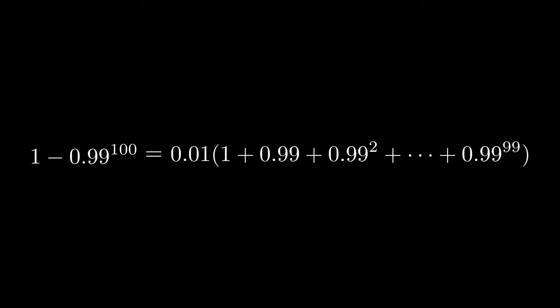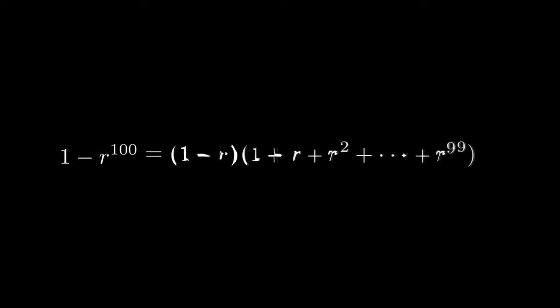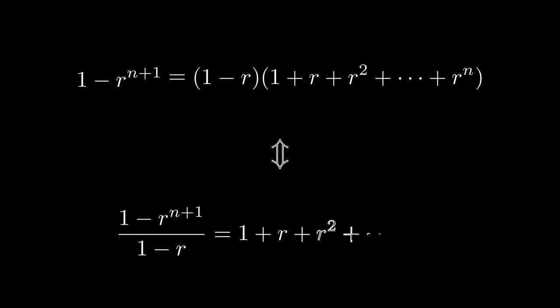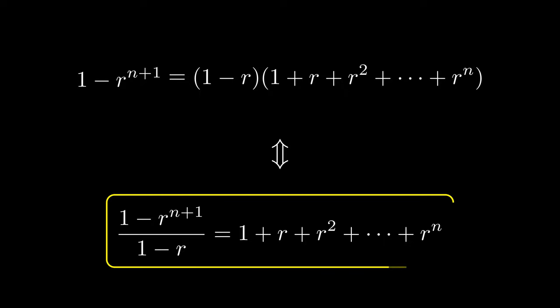Additionally, we can use this problem to derive the formula for a geometric series. We start by equating the probability of pulling a legendary using both our methods with and without using the complement. Now let's generalize by making 0.99 equal to r, and 99 equal to n. Dividing both sides by 1 minus r gives us our geometric series.